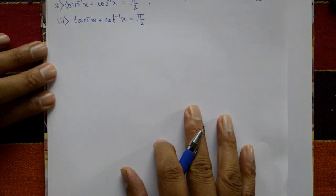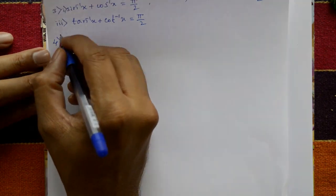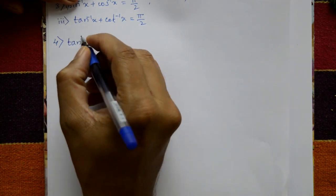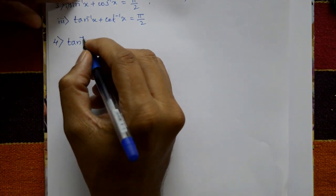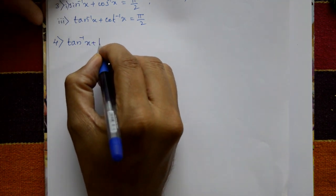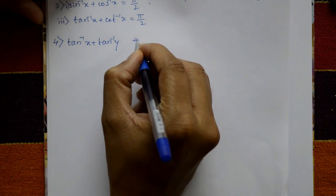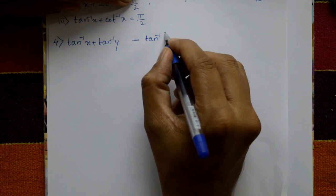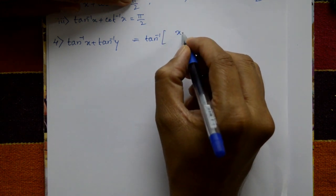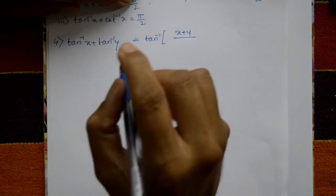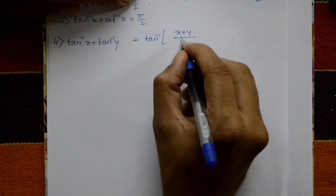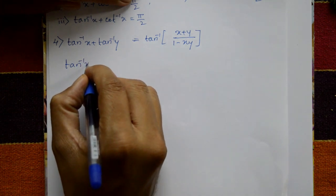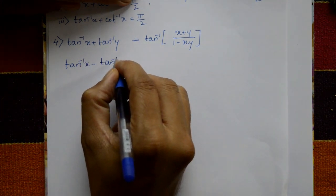Continuing — fourth set. You know the tan of a plus b formula, so: tan inverse x plus tan inverse y is equal to tan inverse of x plus y upon 1 minus xy. Similarly, changing the sign: tan inverse x minus tan inverse y is equal to tan inverse of x minus y divided by 1 plus xy.